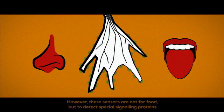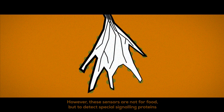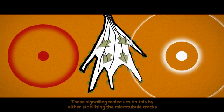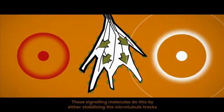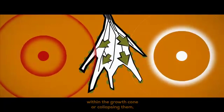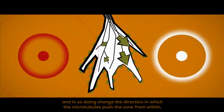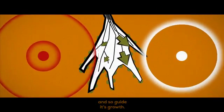However, these sensors are not for food, but to detect special signalling proteins that either attract or repel the advancing growth cone. These signalling molecules do this by either stabilising the microtubule tracks within the growth cone or collapsing them and, in so doing, change the direction in which the microtubules push the cone from within and so guide its growth.